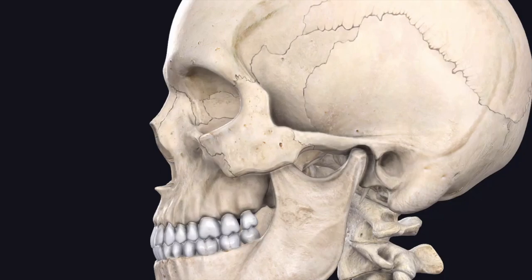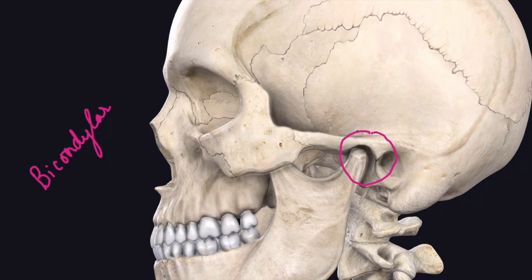In this video we will study about the temporomandibular joint. The temporomandibular joint is a pair of synovial joints. The joints of both sides move as one unit and form a bicondylar articulation. The type is synovial joint and the variety is condylar joint.